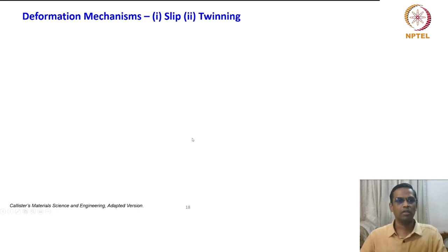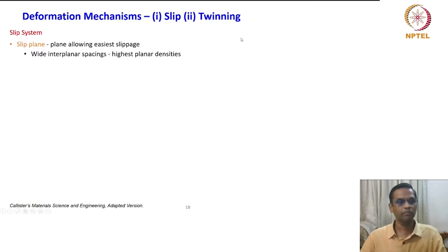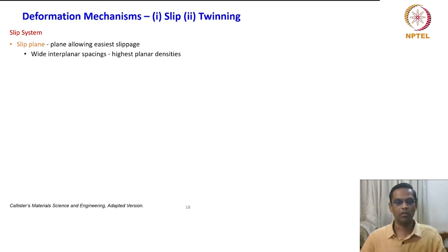If you look at what are the primary mechanisms which govern deformation, the first is slip and twinning. We will first see what is slip. Slip, in crystallographic terms, is the slipping of a large portion of a crystal aggregate. That is slip.